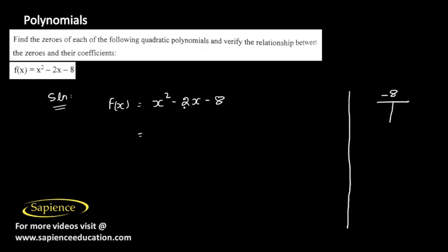We need two numbers that when multiplied give -8 and when added give -2. Those numbers are -4 and 2. So the middle term is split as: x² - 4x + 2x - 8.